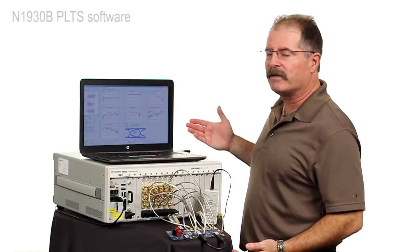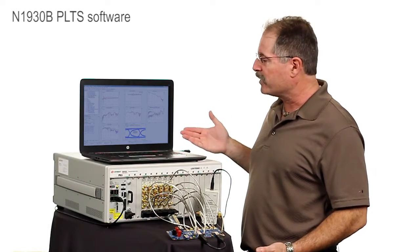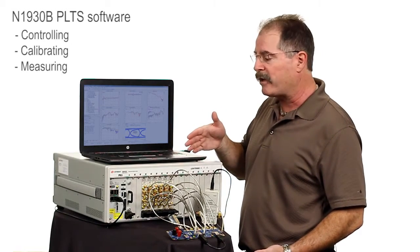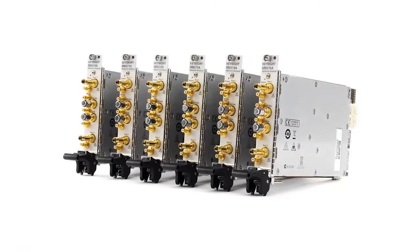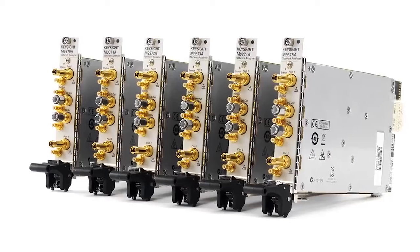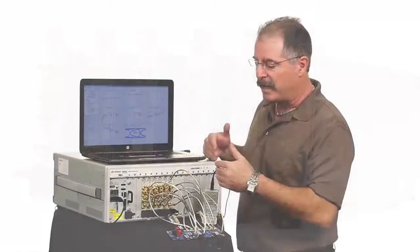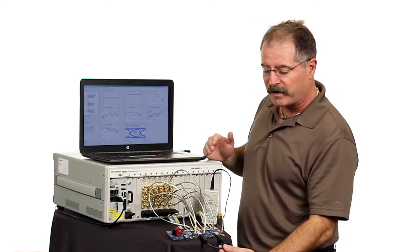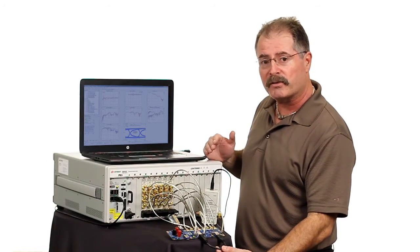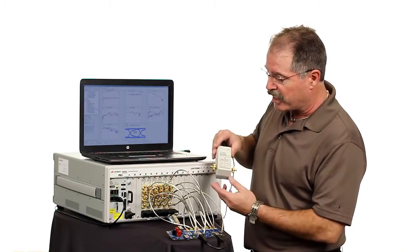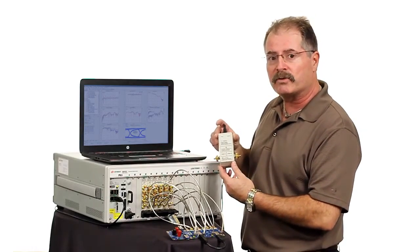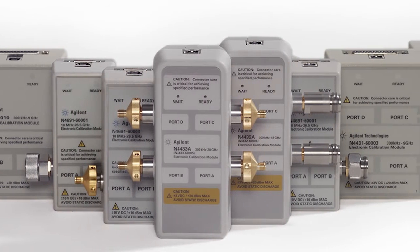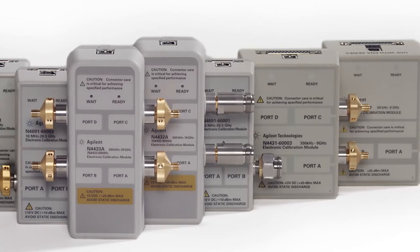What we have is the physical layer test system software running on this laptop, which is controlling, calibrating, and measuring this PXI Vector Network Analyzer chassis with individual blades of PXI two-port VNAs on each blade, and test cabling into a USB 3.0 test fixture. The device under test in this case is a USB 3.0 cable. And the nice thing about a system like this is being able to use an electronic calibration module that makes it very easy to calibrate all 12 channels inside the PXI Vector Network Analyzer.